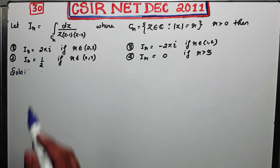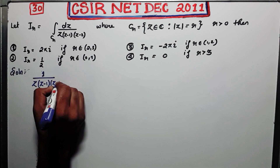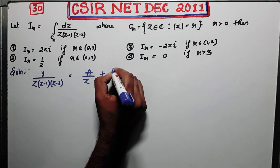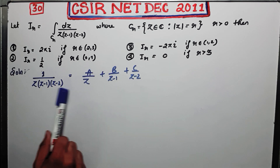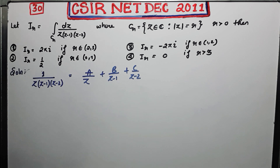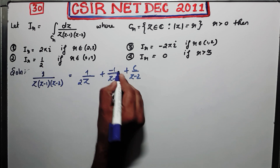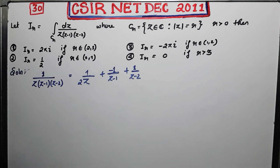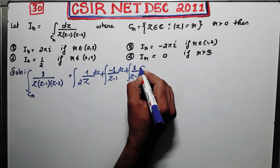The first step while solving this type of question is that you have to use partial fraction to separate this out. I will show you what partial fraction I am talking about — you need to find A, B, C such that you can write the integrand in that decomposed form. This is a class 12 formula, so I will leave it as an exercise for you. Therefore, the integration over CR will equal the sum of three separate integrals.